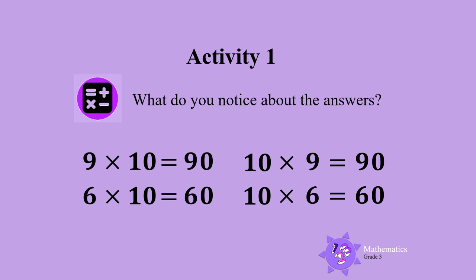Look at the number sentences and answers. What do you notice about the answers? If you said that the answer is the number we are multiplying 10 by, with the 0 in the 1s place, then you are correct.